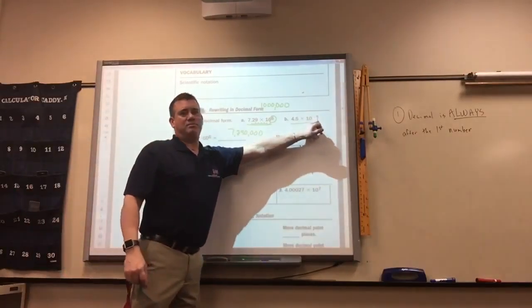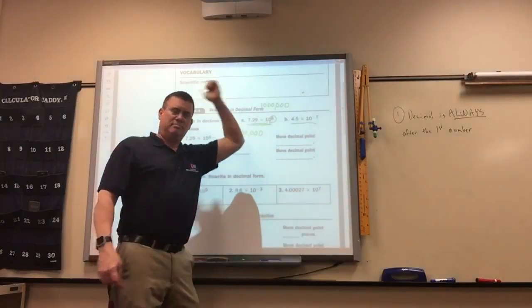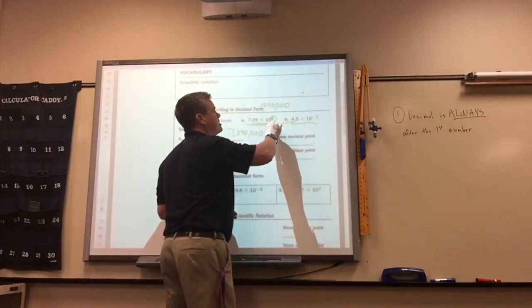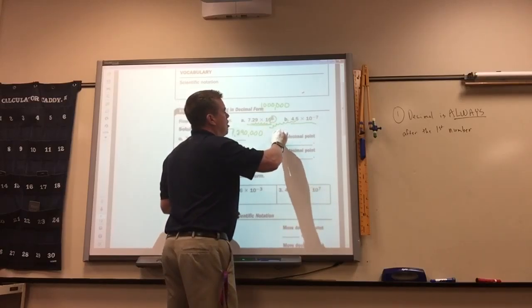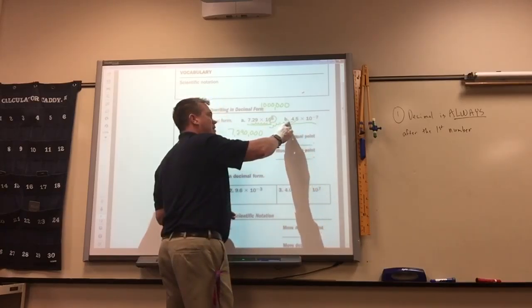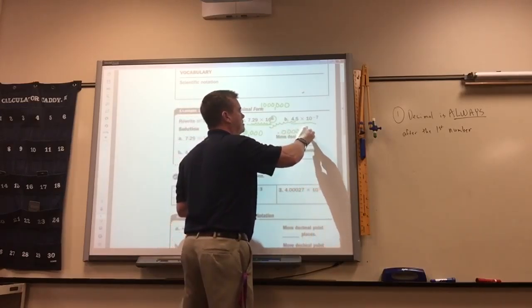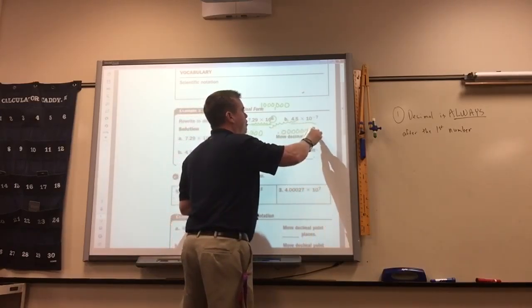So if it's a negative decimal, then what do you got to do? Move it to the left. Seven spots. One, two, three, four, five, six, seven. So since I moved at one to get to the beginning, I'd have to move it six more, which means there'd be six zeros there. And then the four, five.